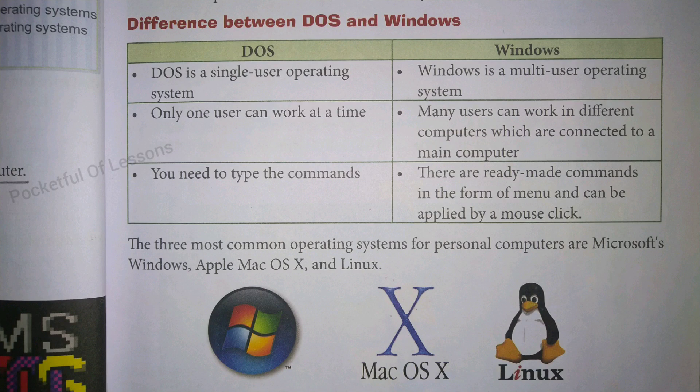Hello everyone. Today I am going to continue the same chapter, chapter number 3 titled The Operating System. In the previous class, we have learned what is an operating system and the types of operating systems — how many types there are. There are two types of operating system: single user operating system and multi-user operating system.